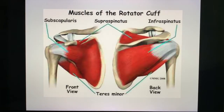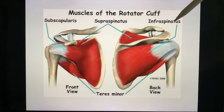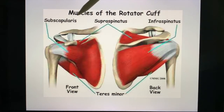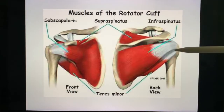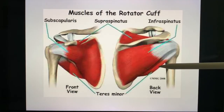What about the rotator cuff? We know this is going to come out. The muscles comprising the rotator cuff are: the supraspinatus, the infraspinatus, the subscapularis, and the teres minor — supra, infra, sub, and teres minor.